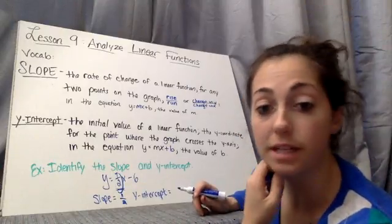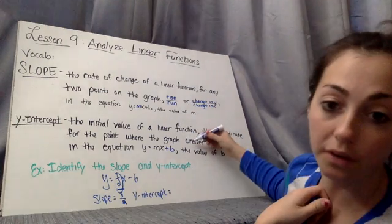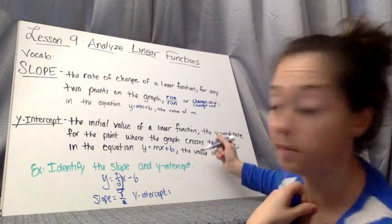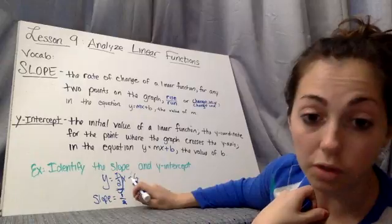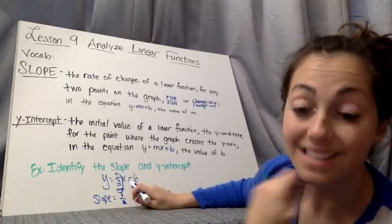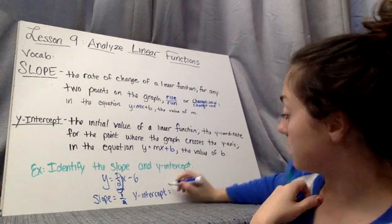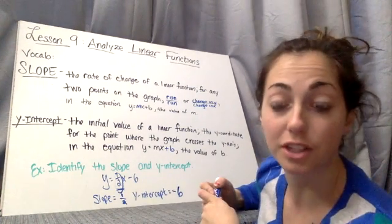And then my y-intercept, it says here that's the initial value, the y-coordinate on the graph, and in the equation y equals mx plus b, the value of b. So it looks like it's six. But there's a sign in front, and that's a part of it. So it's negative six. There we go.